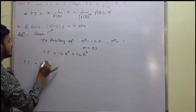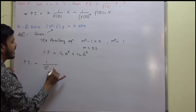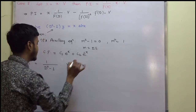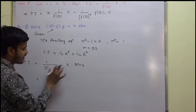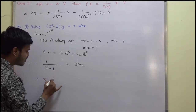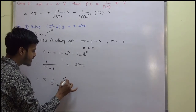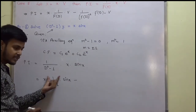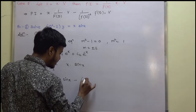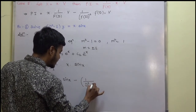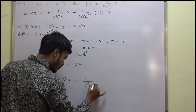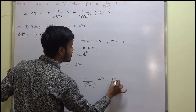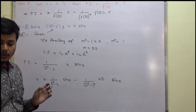We are highly interested in finding the particular integral PI for this example. PI equals 1 upon (D² − 1) into x·sin x. Rearranging, we apply case 5: x into 1/(D² − 1) into sin x as the first term. For the second term, the derivative of x is 1, and the derivative of 1/(D² − 1) is 1/(D² − 1)² into 2D.